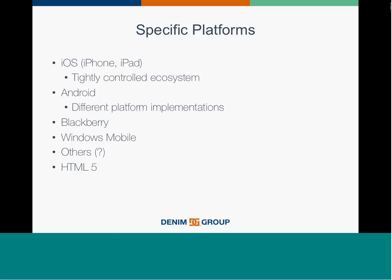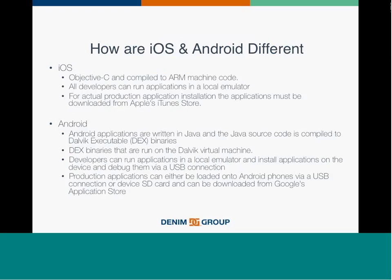At a code level, iOS is written in Objective-C, compiled to ARM machine code. Developers can run applications on a local emulator, but anything published has to go through Apple's iTunes Store. Android is written in Java; source code is compiled to Dalvik executable binaries, or DEX, run on a Dalvik virtual machine. Developers can run applications on a local emulator and debug them via a USB connection. Production applications on Android can be loaded via USB, SD card, or from the Google Play Store. These are very different architectures, and we get the question from clients: 'It's the same application — why do you have to test it twice?' Essentially there are two different applications performing the same function.